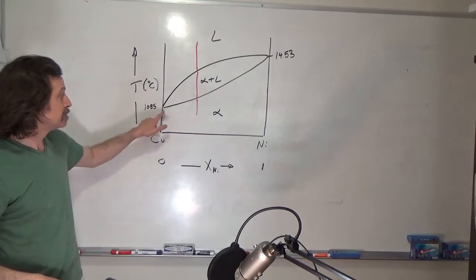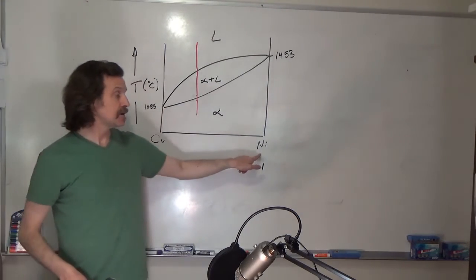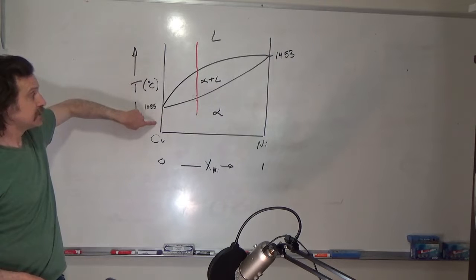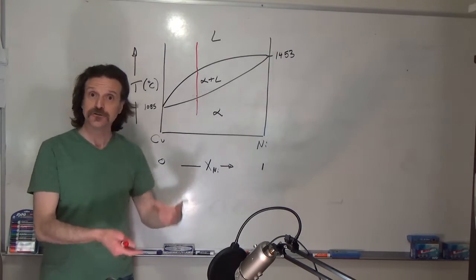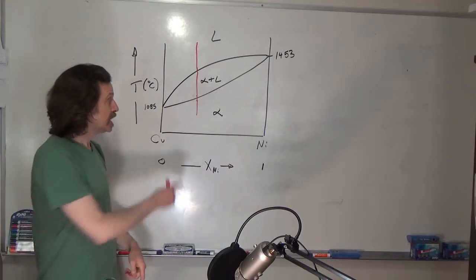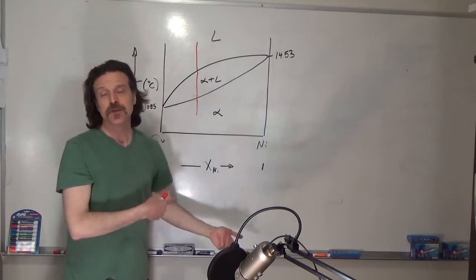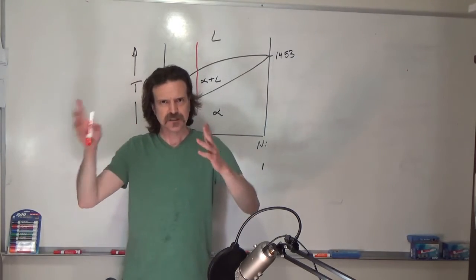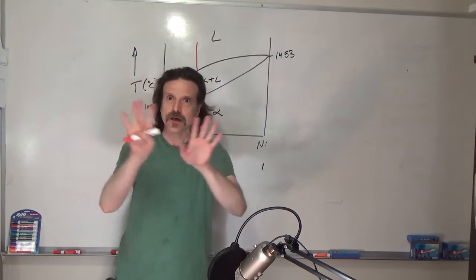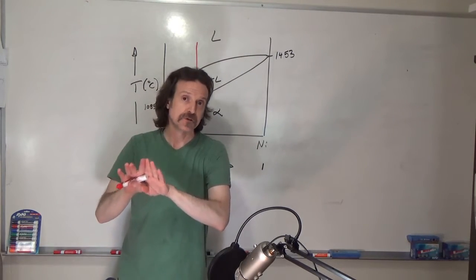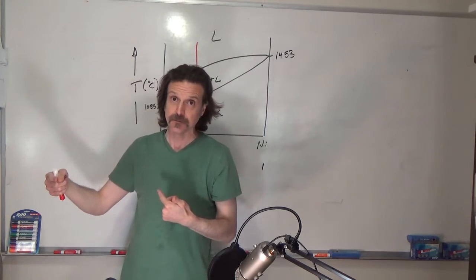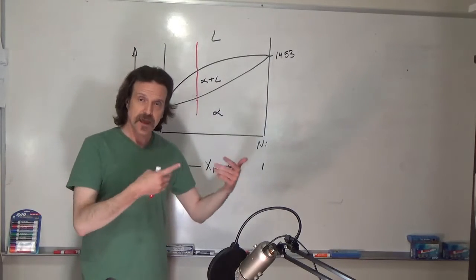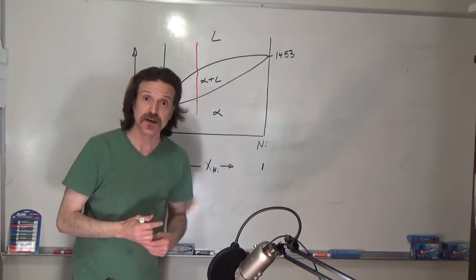If you have two different single-phase regions, there is going to be between them a two-phase region, except for a few very special points. For example, pure copper and pure nickel are special compositions where you can go from liquid to solid without a two-phase region. Anywhere in the middle — most compositions — you have to have a two-phase region. If someone gives you a phase diagram where alpha, beta, and gamma are all right on top of each other, that tells you there's probably a mistake or something non-standard, so be careful.